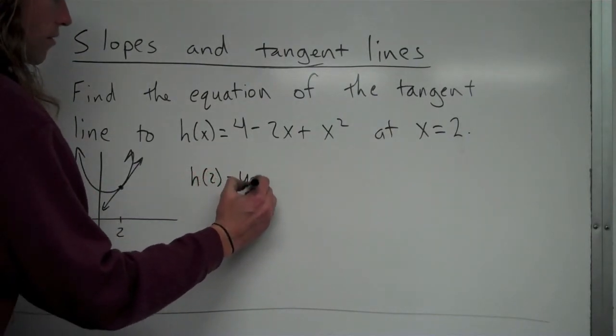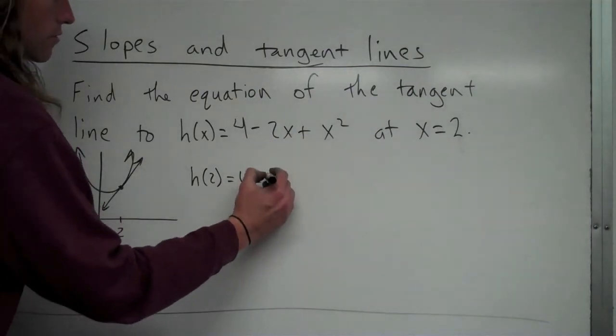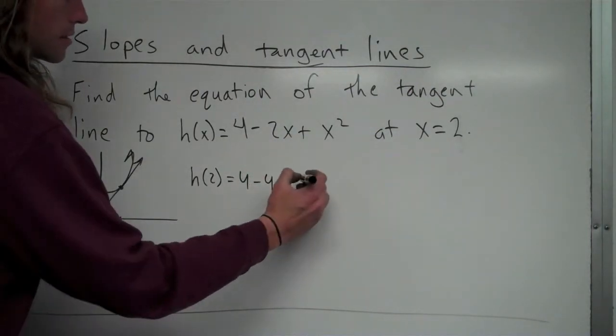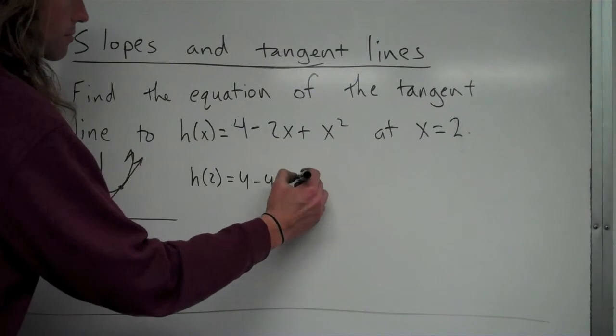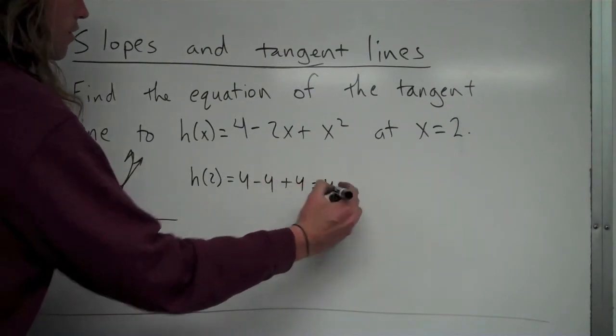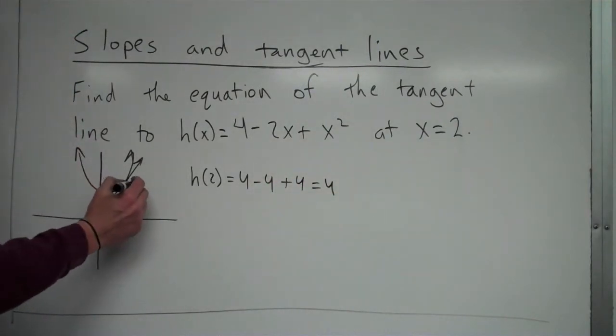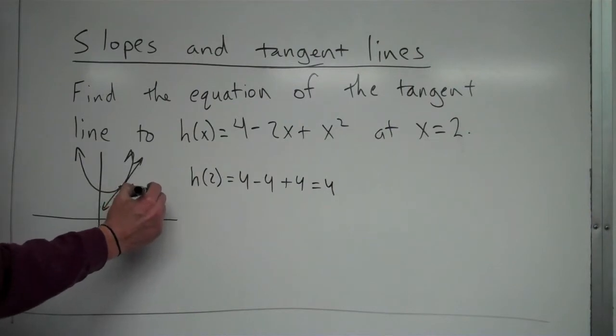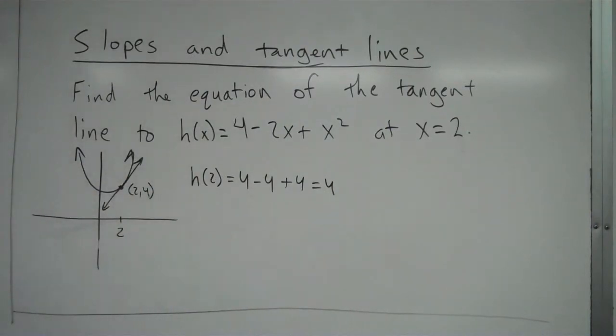So h(2) is going to be 4 - 2(2) + 2², which is 4 - 4 + 4 = 4. So we have right here, our point is (2, 4). So that's the point that we're going to use. There are other points on that line, of course, but that's the point that we know.